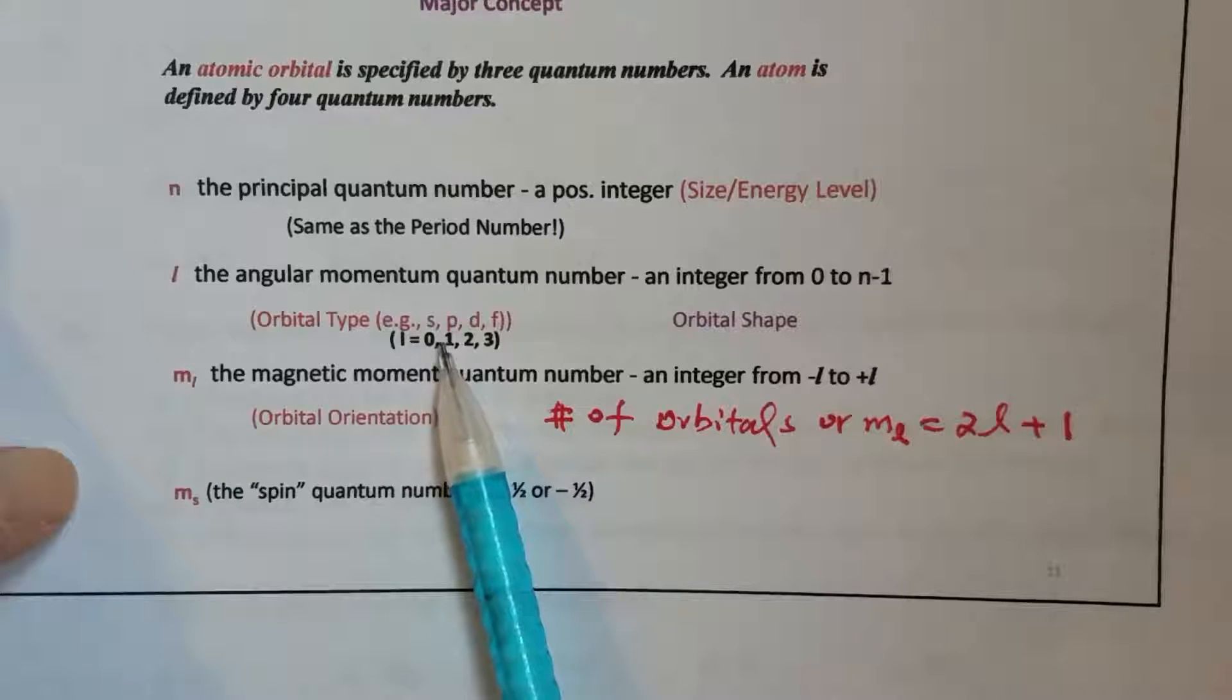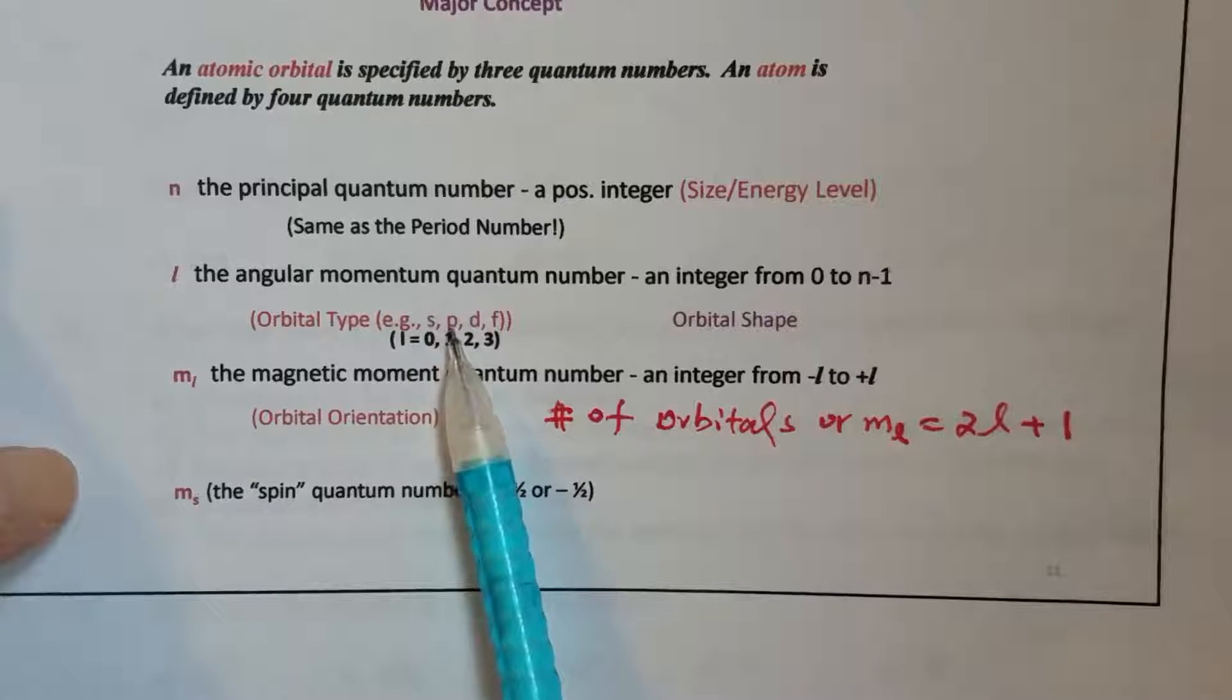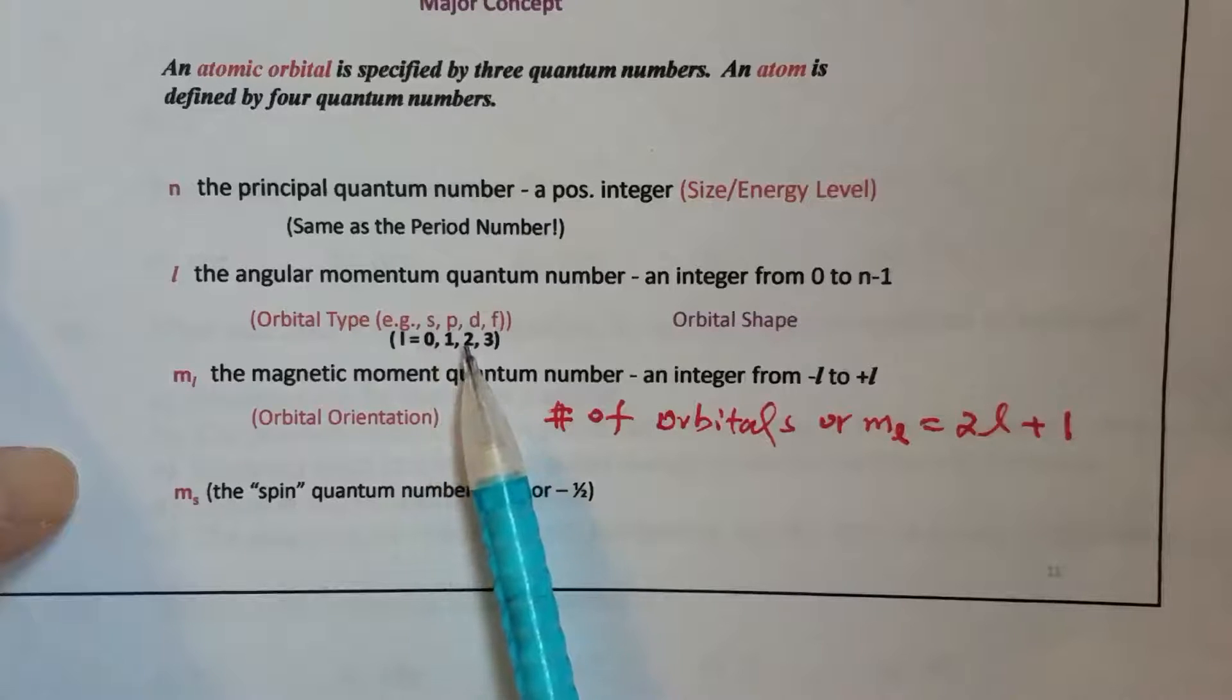So l equals 1, that should be p subshell, and then l equals 2, that should be d subshell.